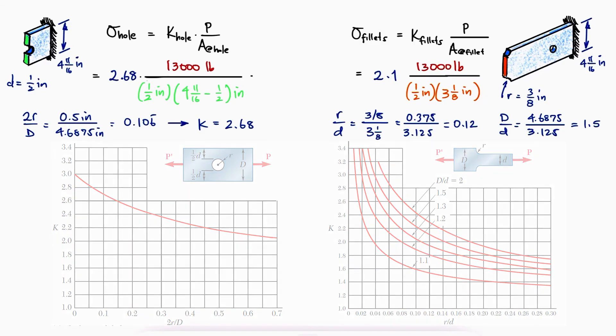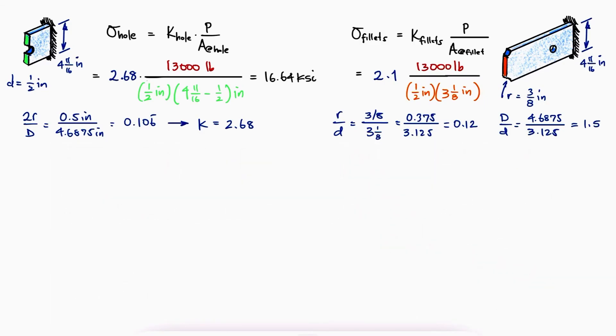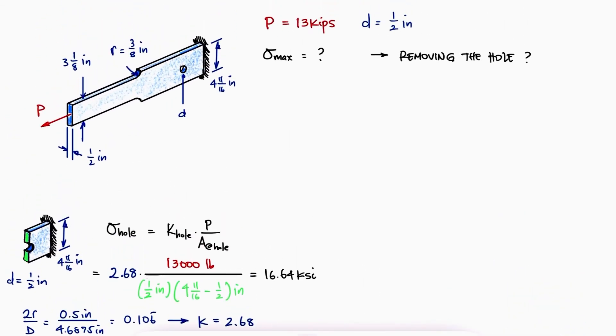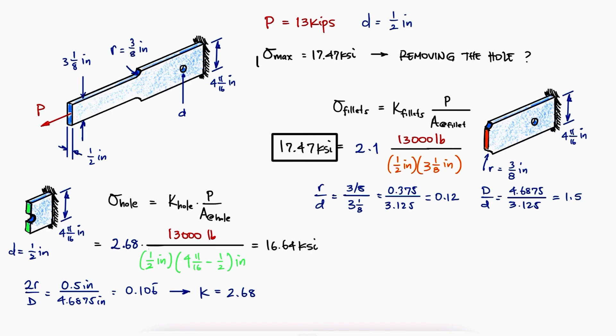With this information, we can evaluate the stress at the hole and the stress at the fillet. The maximum stress would therefore be 17.47 KSI happening at the fillet, which means that getting rid of the hole would not change the value of the maximum stress.